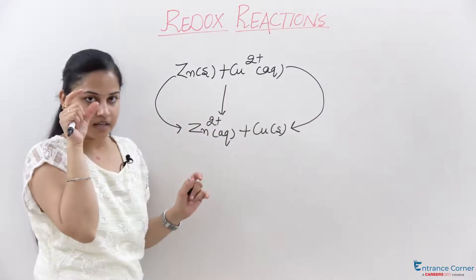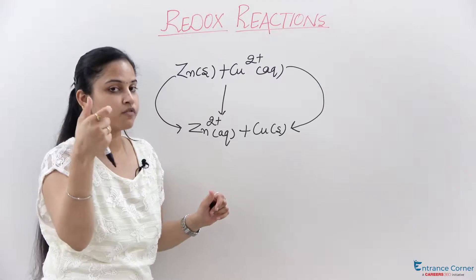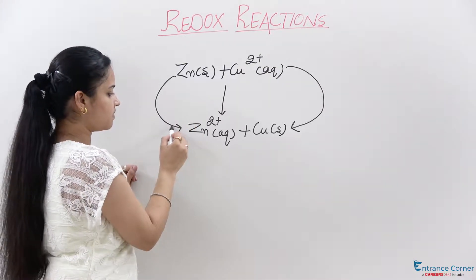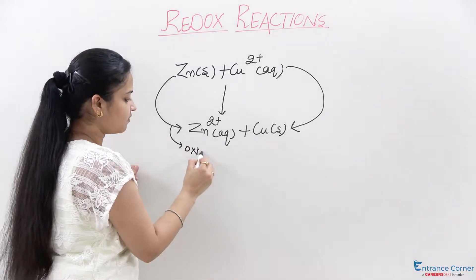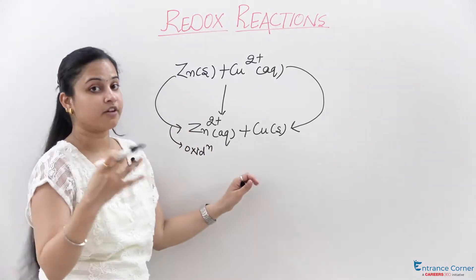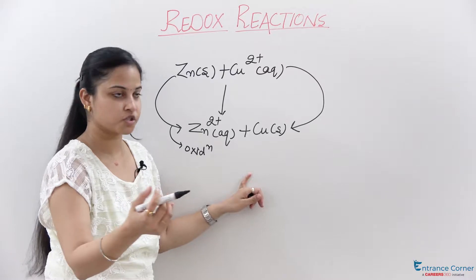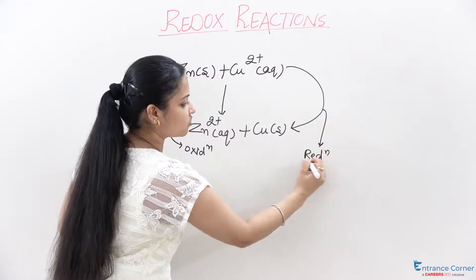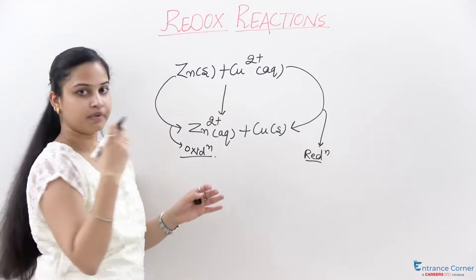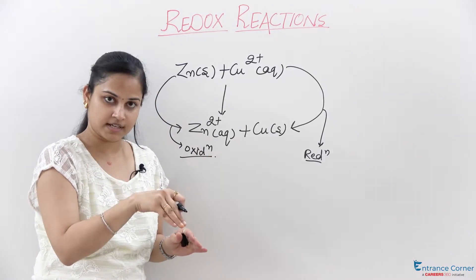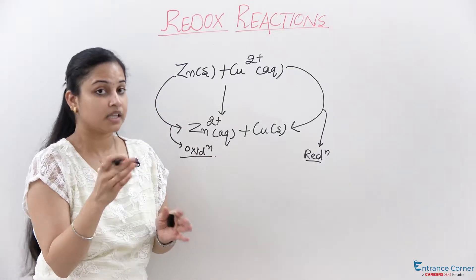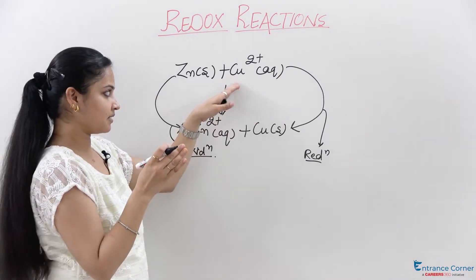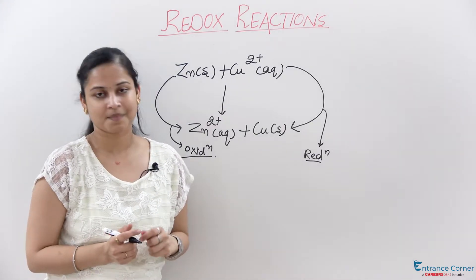Over here, if there is loss of electrons, it means oxidation. So this is oxidation. And if there is gain of electrons, that process is known as reduction. So it is reduction. What you are seeing is that in this reaction, oxidation and reduction are going on simultaneously, so it will be considered as redox reaction. Thank you very much.